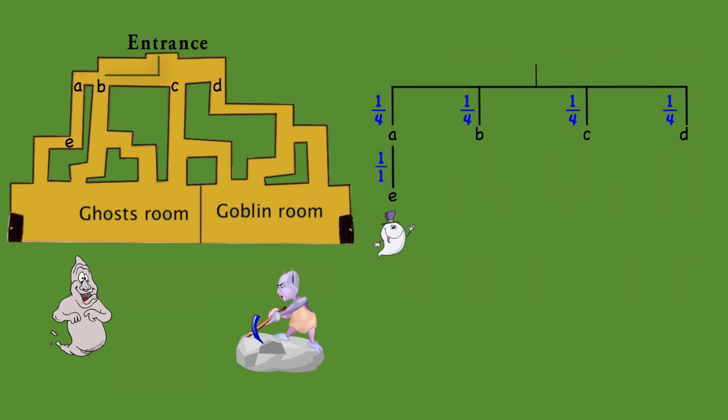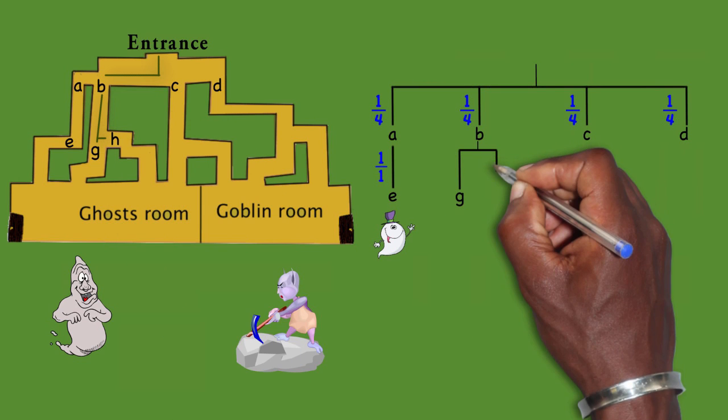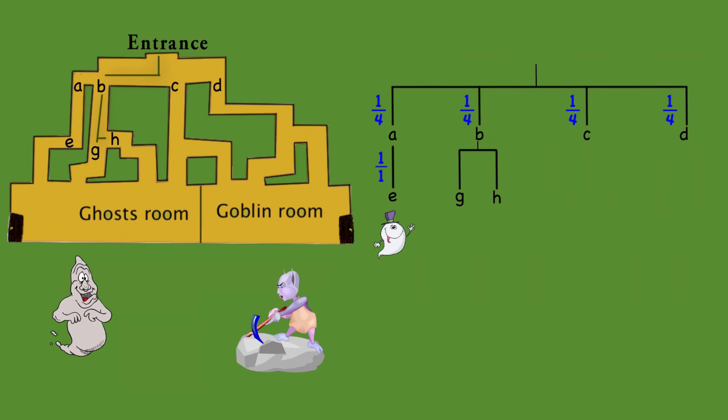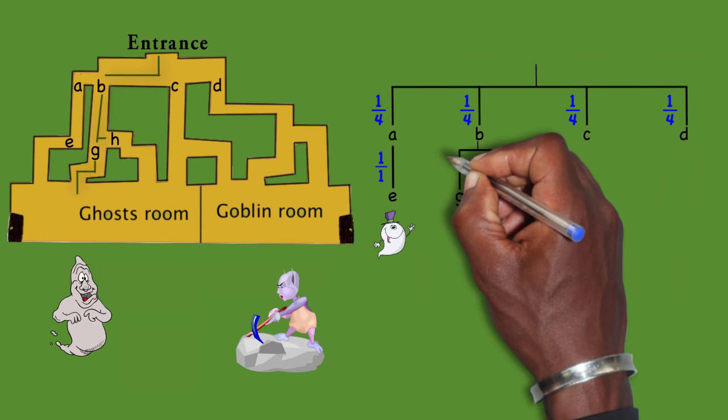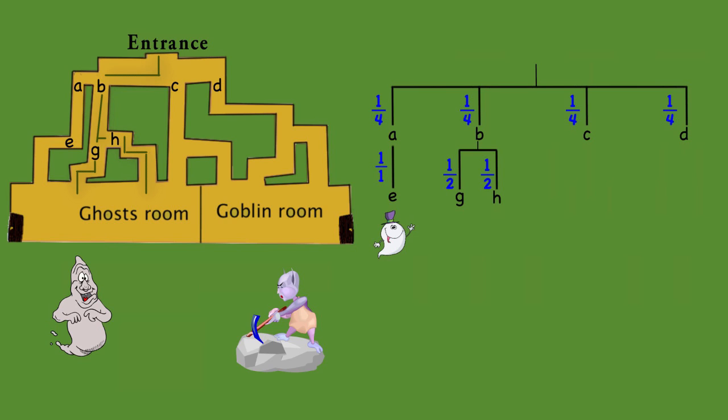Now, if you choose path B, once you walk down this path you have two options. You can continue to go straight, so I'll label them. You have option G or you have option H. So there are two paths. If you choose path G, you have a 50% chance of choosing that. You have a 50% chance of choosing path H. Once you choose path G, you're pretty much straight at the ghost room. If you are on path H, you keep walking until you get to the ghost room.